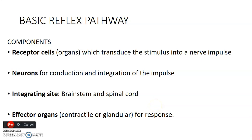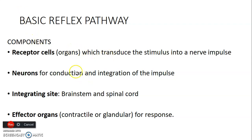Hello, it's Dr. Omende. This is just to conclude on basic neuroanatomy. We had left at basic reflex pathway. We said we have four components. We have a receptor cell, which is able to transduce the stimulus — so if it's pain or temperature, that's a stimulus — and it will transduce it into a nerve impulse. Then we have neurons, which conduct from the receptor to the integrative site to effector organs.